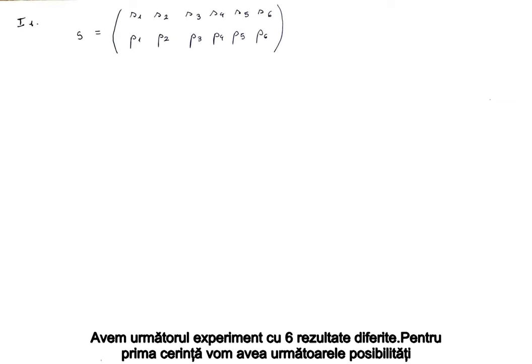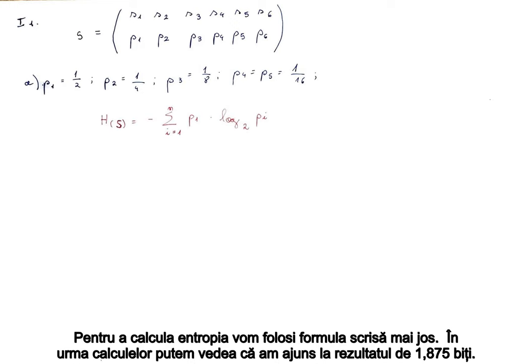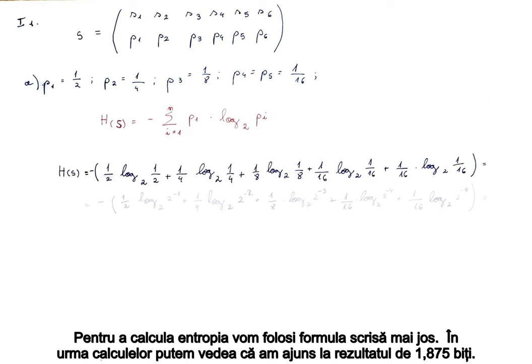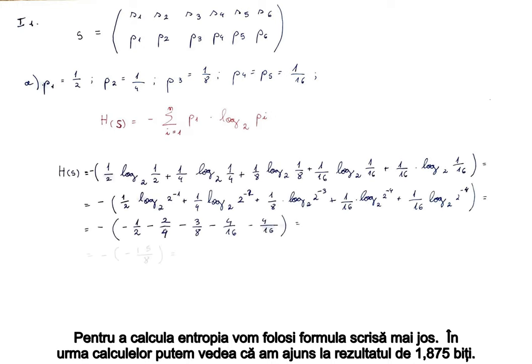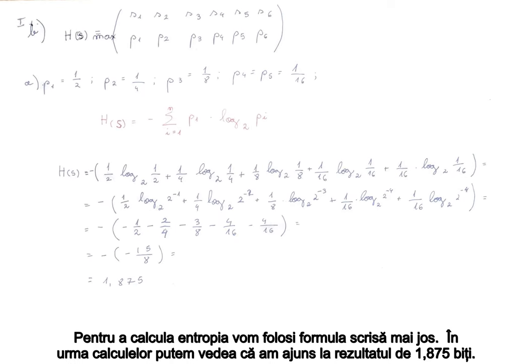We have the following experiment with six different outcomes. For the first requirement, we're going to have the following possibilities. To calculate the entropy, we're going to use the formula written below. After the computations, we can see we reached the result of 1.875.